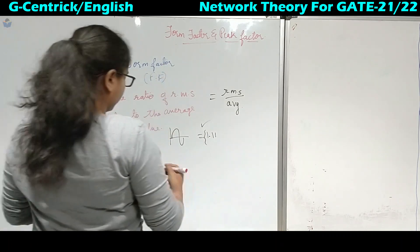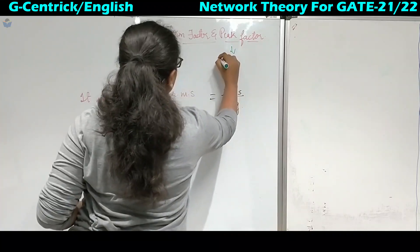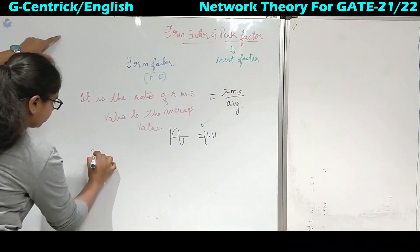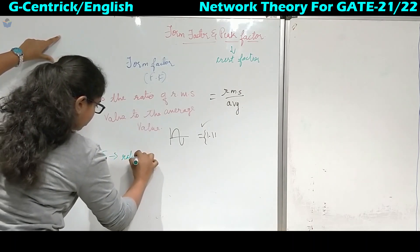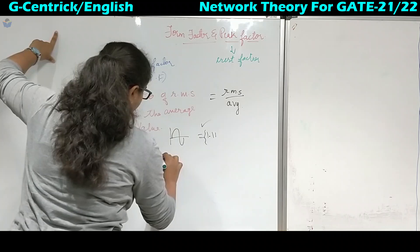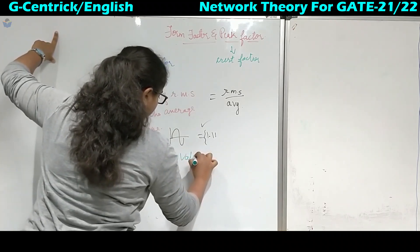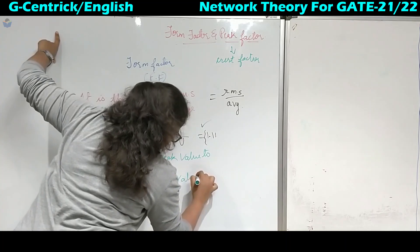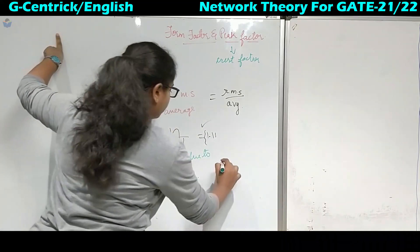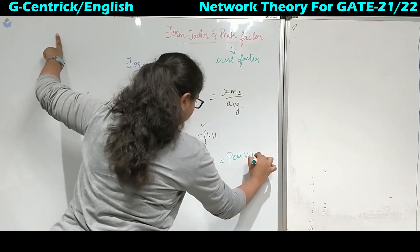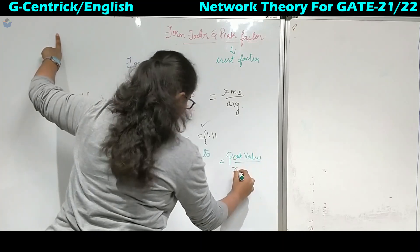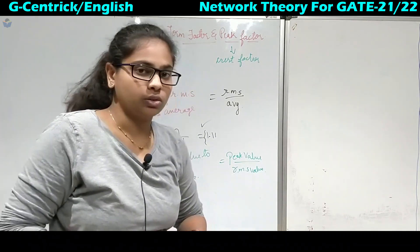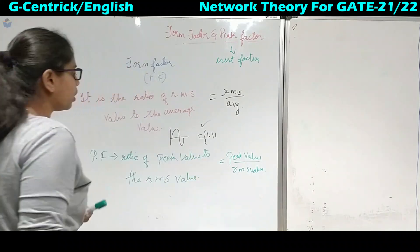Coming to the peak factor — it is also called the crest factor. Its definition is the ratio of the peak value to the RMS value, i.e., maximum value upon RMS value. For now, only the definition is important. Knowing the formulas for form factor and peak factor is sufficient.